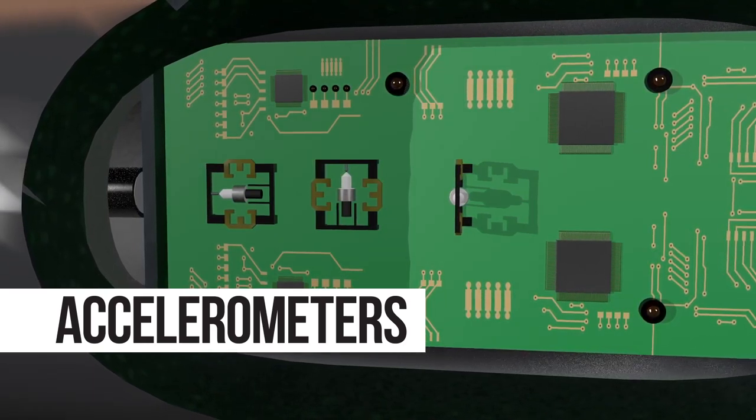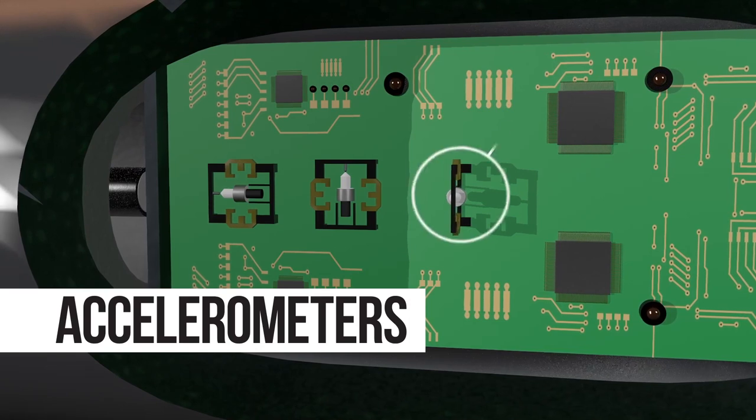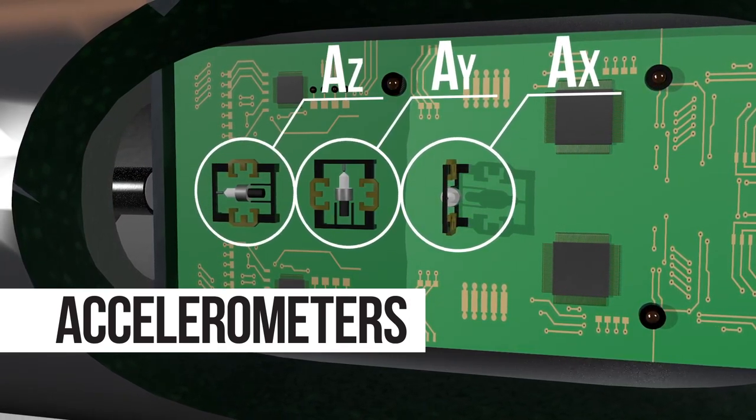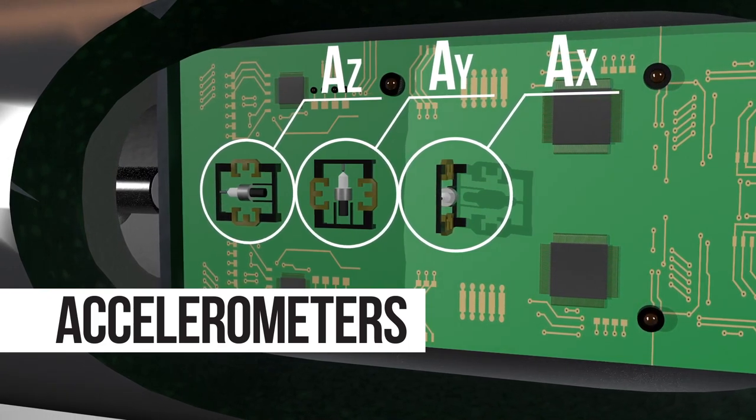Similarly, we refer to them as AX, AY, and AZ, where AZ is the along hole sensor.